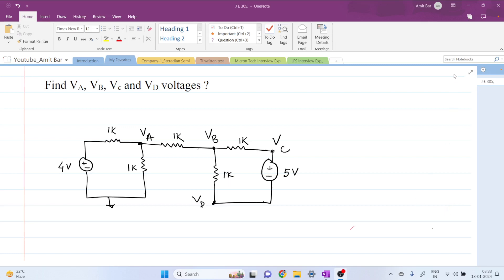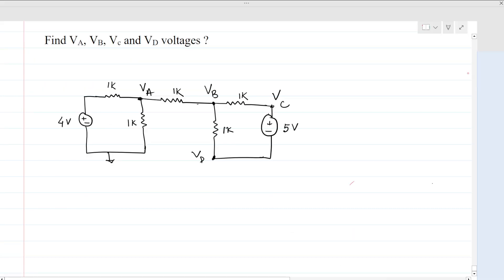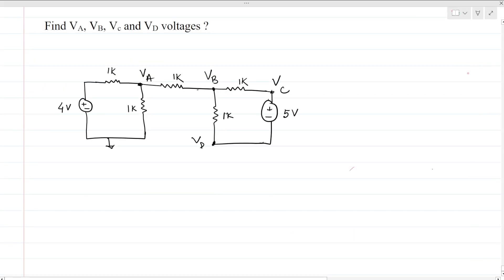Hi everyone, welcome to this session. Today we will solve this very interesting interview question. This is a normal resistive circuit with two voltage sources. We have to find the voltage at each node with respect to ground. We are given two DC voltage sources.